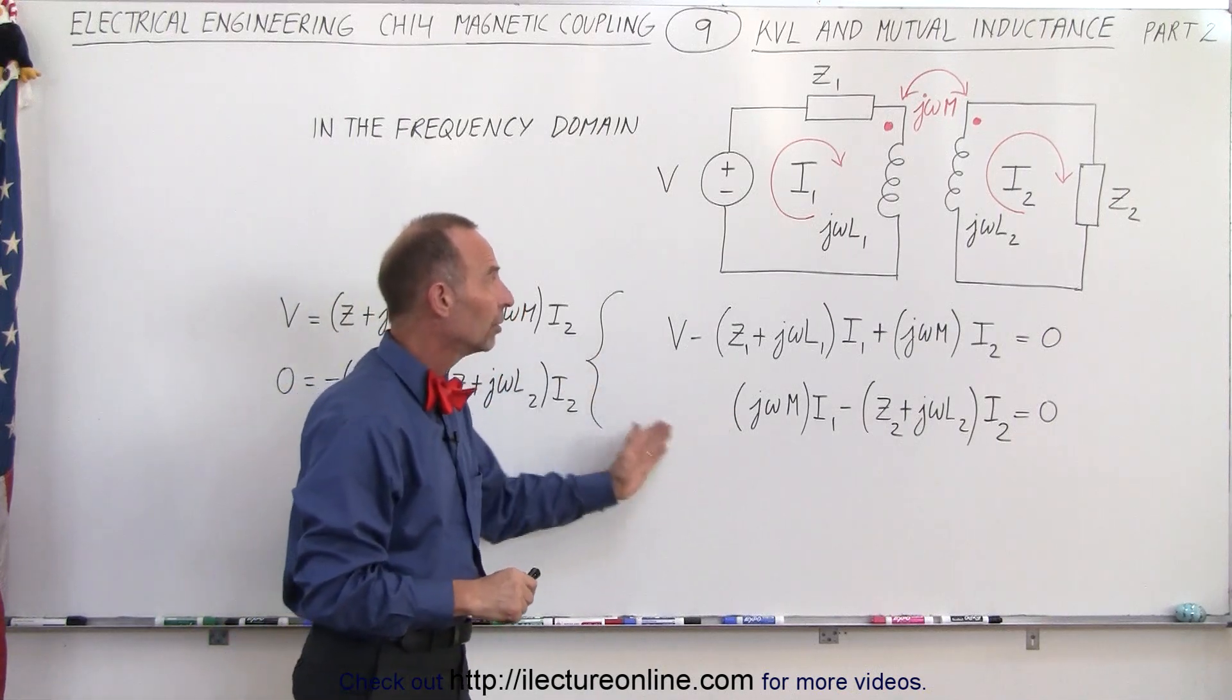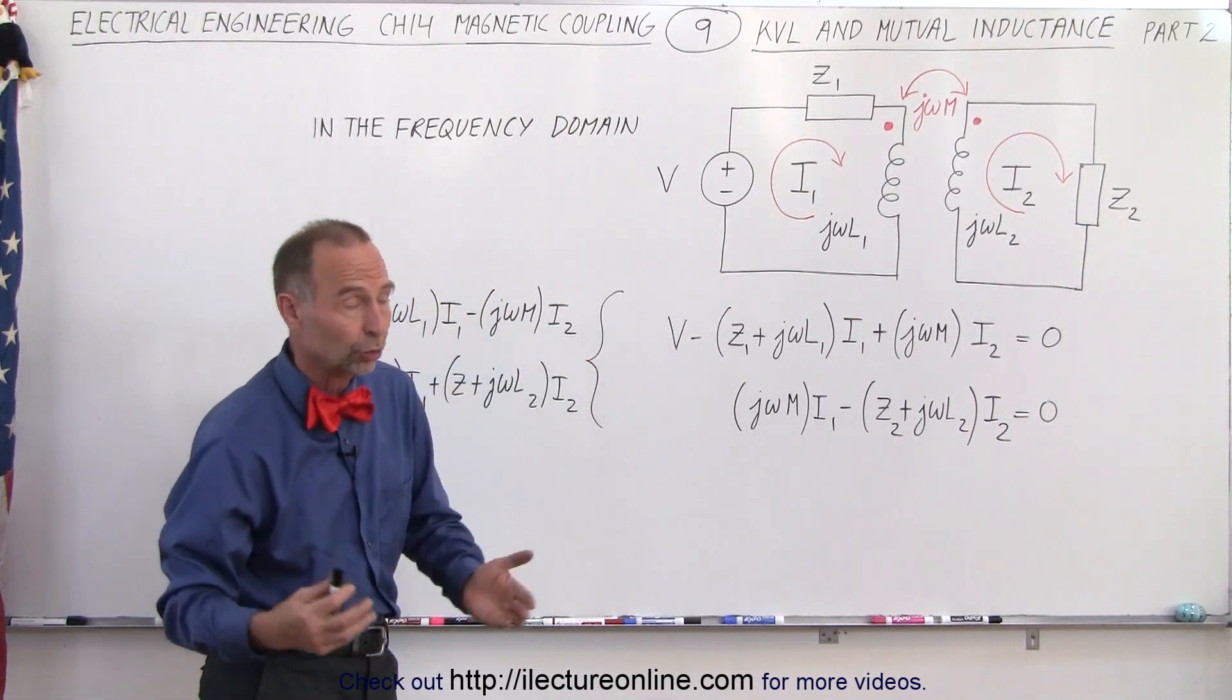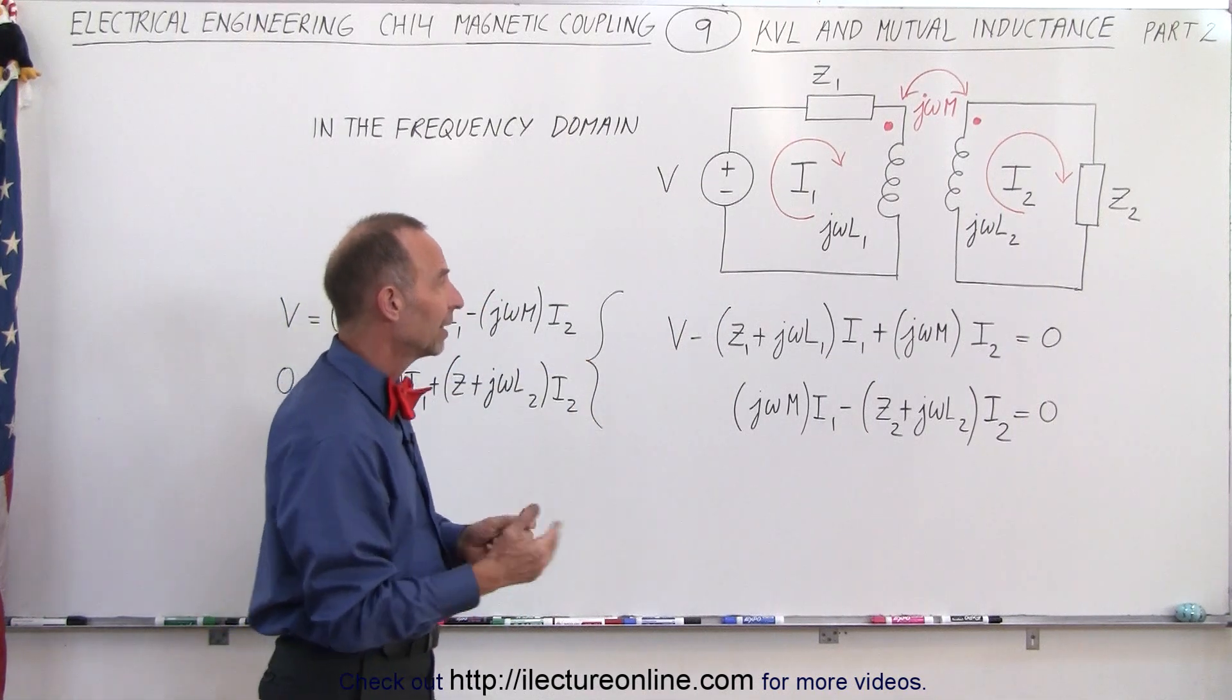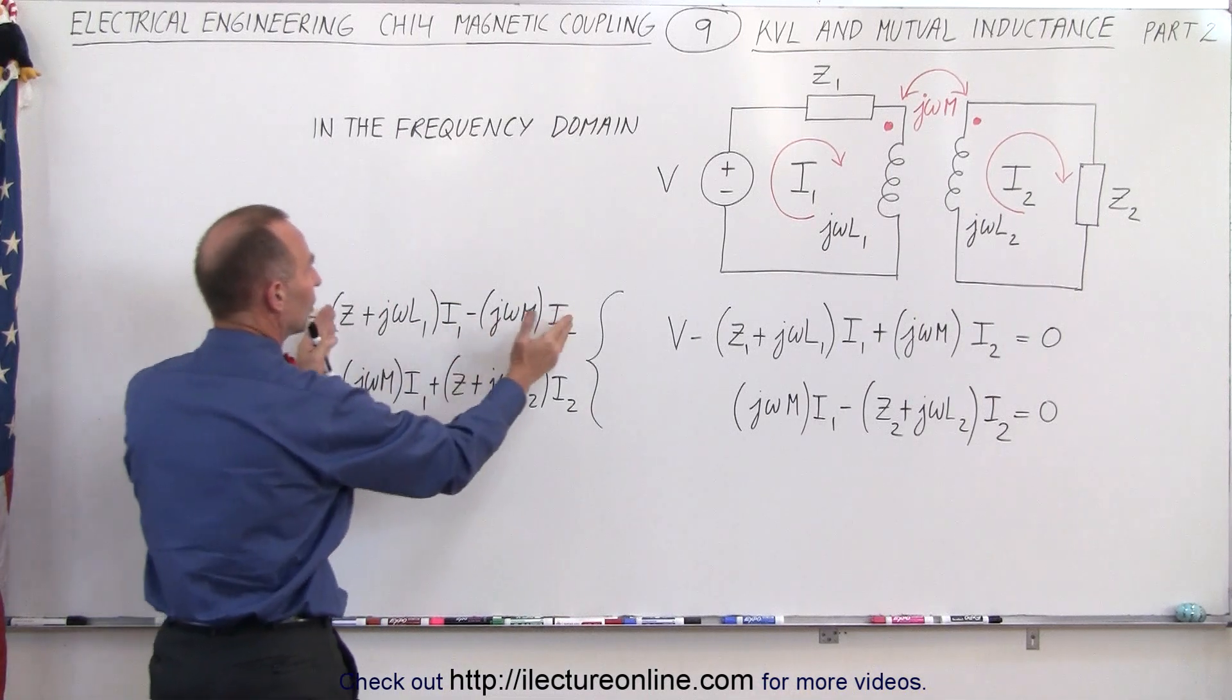So that is how we write the sum of all the voltages around the loop using the KVL, the Kirchhoff voltage law. Then, of course, we can move things across. Now we can set that the voltage is equal to this, simply by moving these two terms to the other side of the equal sign.